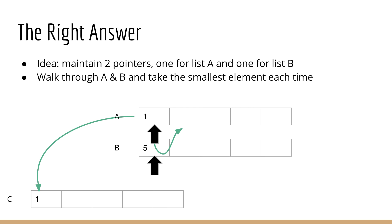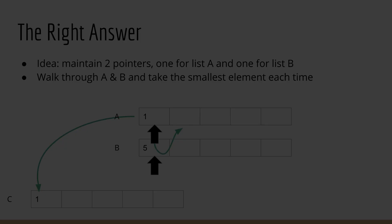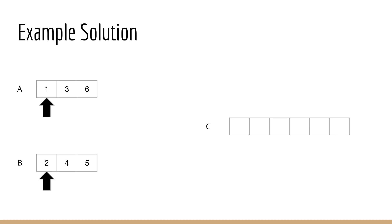Now, before we talk about why that's the wrong answer, let's look at the right answer. The intuition for the right answer is this. Basically, we are going to maintain two pointers, one for list A, and one for list B. We are going to walk through each of the two lists element by element, taking the smallest element each time. At each step, we're going to push the smallest element onto our resulting list. So our result list will grow step by step, and each element added to it will be the smallest available element at the time.